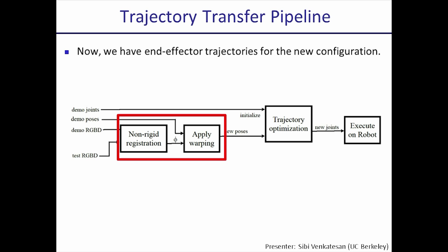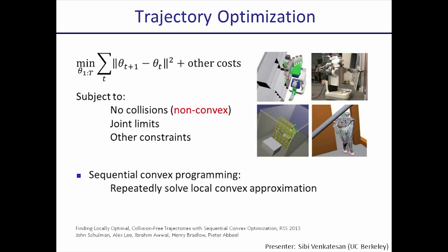With the function we've just learned, we've transferred the gripper trajectory to the new situation. Now we need to execute this gripper trajectory on the robot, and for this we need a motion plan. Trajectory optimization was proposed by Schulman et al. at RSS this year. It solves an essentially non-convex problem — non-convex because of the collision constraints — by repeatedly solving local convex approximations. This technique solves a large fraction of motion planning problems in complex environments with obstacles.